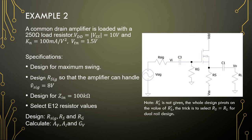Example 2 is a dual-rail application, loaded with a 250 Ω load and ±10 V rails. We should design for maximum swing. A signal of 8 V should be handled, with an input impedance of 100 kΩ.